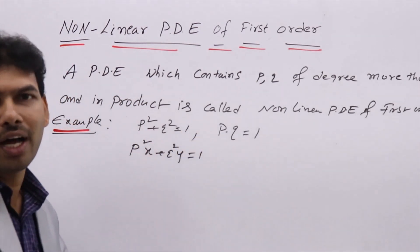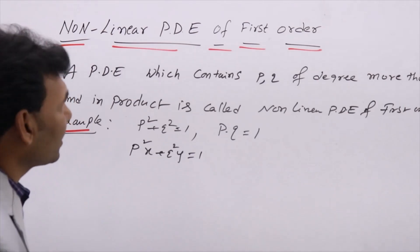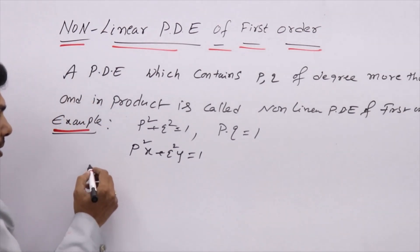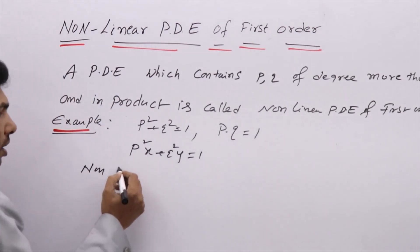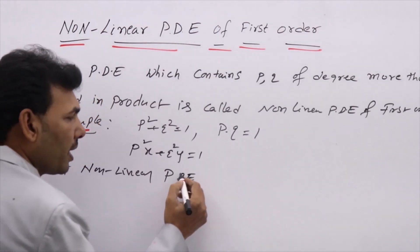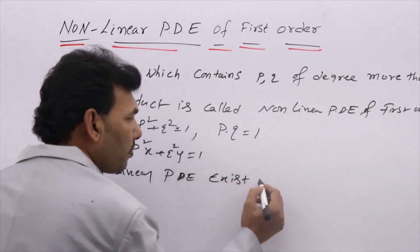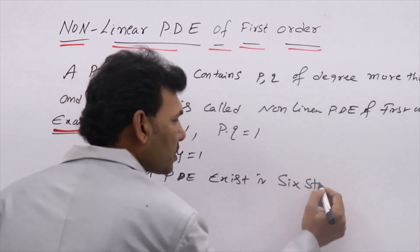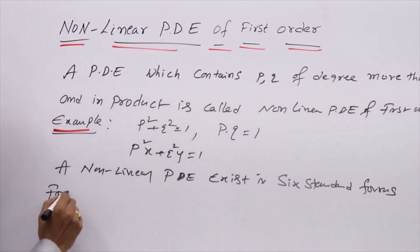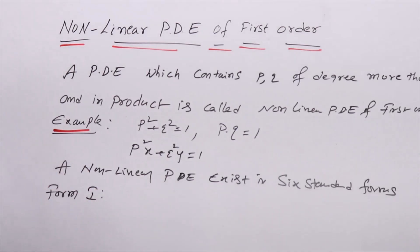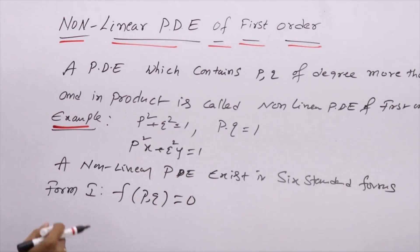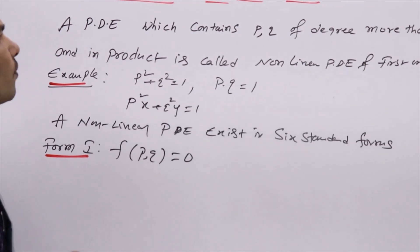A PDE which contains these types of derivatives is Non-linear. Generally, Non-linear PDEs exist in 6 standard forms. In Form 1, you will have only p and q terms — like p³ — of degree more than 1.